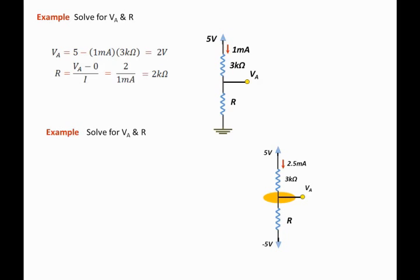Because we know the voltage at the top of the 3 kilo ohm resistor, that is 5 volts, and we know the value of the current that's passing through that resistor, which is 2.5 milliamps, we can use Ohm's law on the 3 kilo ohm resistor to solve for VA.